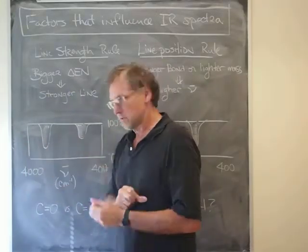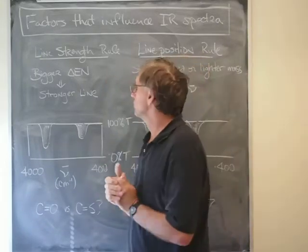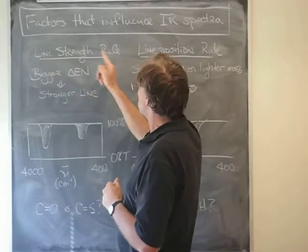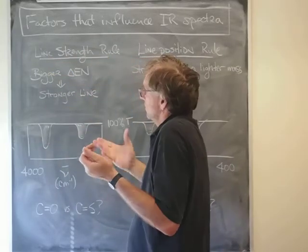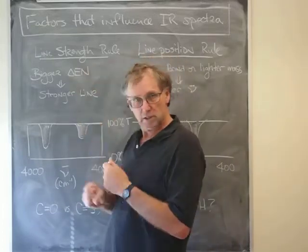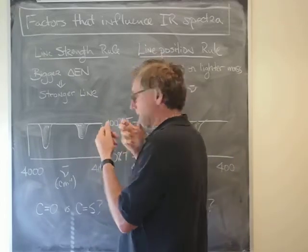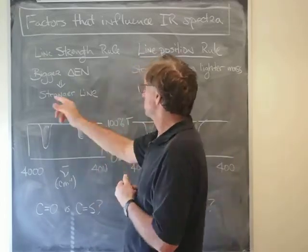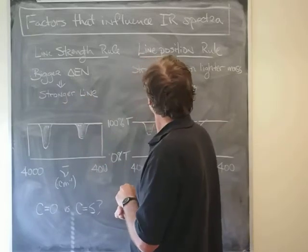Here are the rules. The line strength rule, which determines how far down that goes, is very simple. It just says the larger the difference in electronegativity between two atoms that are bonded, if that difference is really large, then the line is stronger.